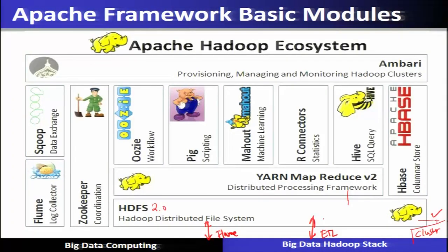Using YARN and MapReduce, there are different other applications of the Hadoop system which will run: Oozie, Pig, Mahout, Hive, HBase, Sqoop, Flume, and Zookeeper. Let us see in more detail about all these different applications available in the Hadoop ecosystem and summarize their use for big data computation.